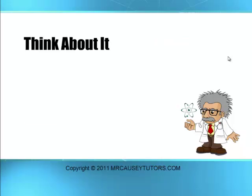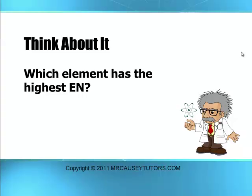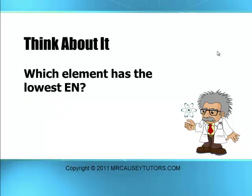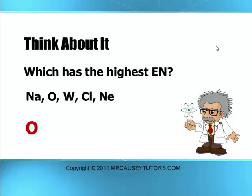What is the electronegativity of the noble gases? Zero — because they don't want any electrons; they have filled octets. Which element has the highest electronegativity? Fluorine. Which element has the lowest, excluding noble gases? Francium. Looking at a set of elements, which has the highest electronegativity? It's probably going to be oxygen. Fluorine is number one, oxygen is number two, and chlorine is number three highest in electronegativity — those three in order are worth memorizing.